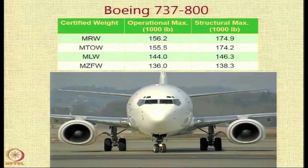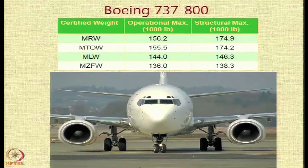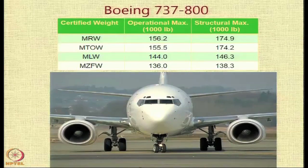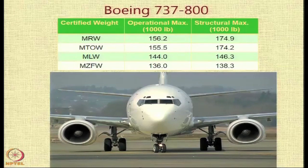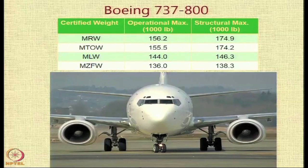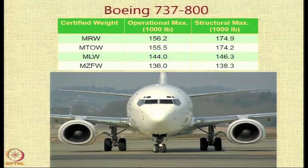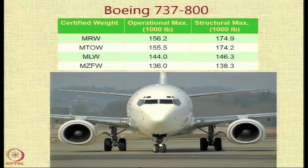Let us take the example of the Boeing 737-800, one of the most popular transport aircraft. The certified weights include both an operational maximum limit and a structural maximum limit. This aircraft has a maximum ramp weight of 156,200 pounds, a maximum takeoff weight of 155,500 pounds, a maximum landing weight of 144,000 pounds, and a maximum zero fuel weight of 136,000 pounds.